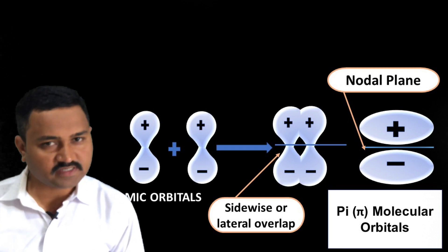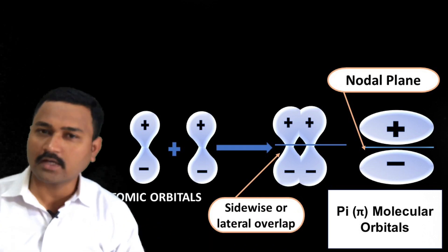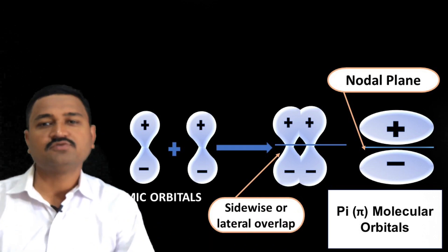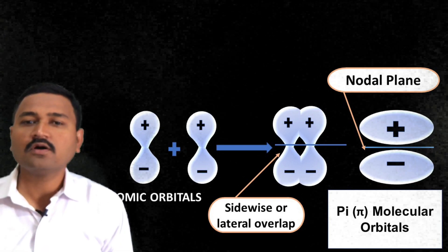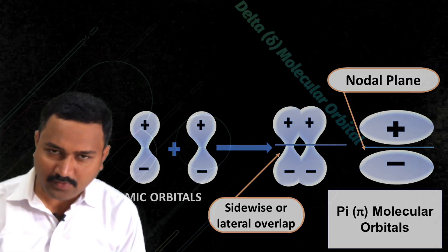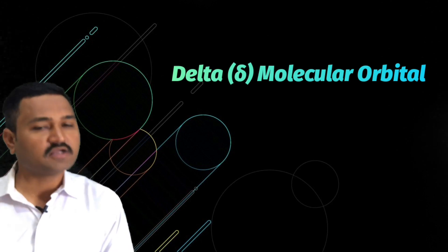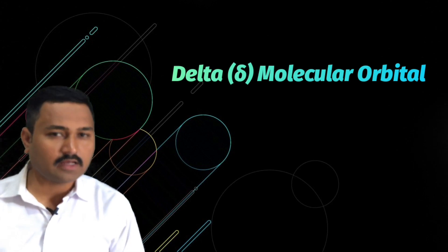That is about the second type of molecular orbital, which is the pi molecular orbital. Now let us know about the third type of molecular orbital, which is generally known as the delta molecular orbital.